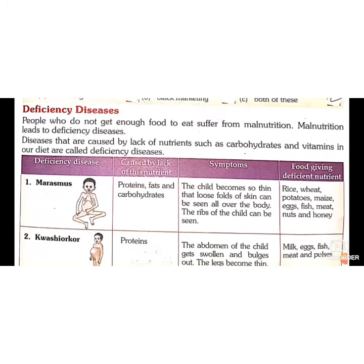The next topic is deficiency diseases. Deficiency means shortage. Diseases caused due to lack of nutrients like carbohydrates, proteins, and vitamins in our diet are called deficiency diseases. These diseases occur in people who do not get enough food to eat and suffer from malnutrition.